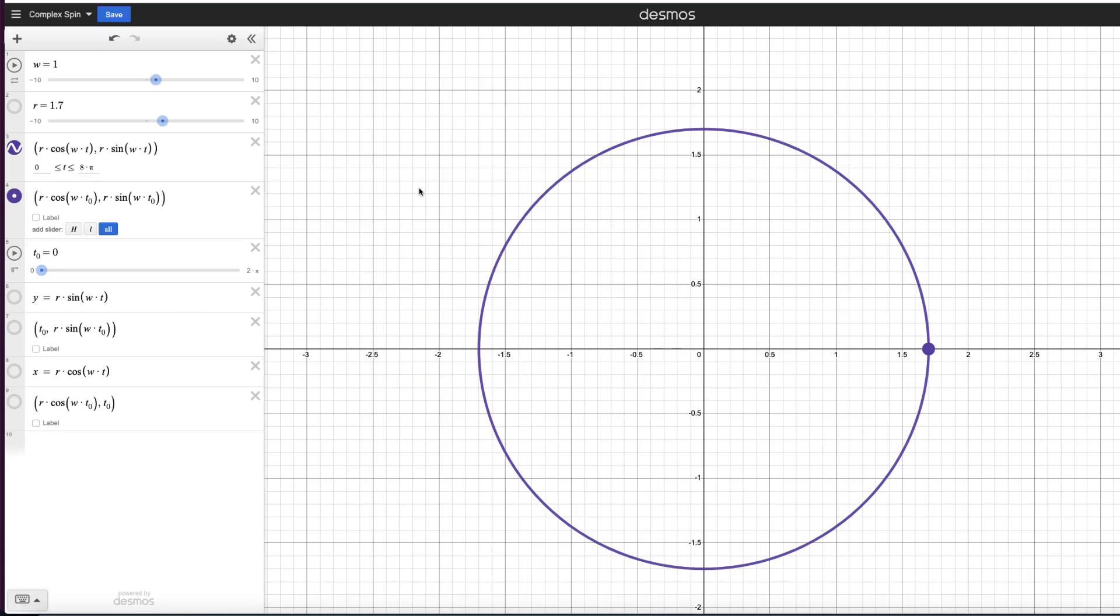Hey everyone, welcome back to Signal Processing with Paul. In this video, I want to give you an illustration of how complex numbers work as a function of time. What I've done here is defined this purple circle to be Euler's expression. This is a complex number where we have the Cartesian coordinates R*cos(W*T), where W is our angular frequency, and R*sin(W*T), which is our Y value.